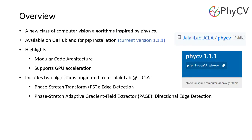PhiCV is a new class of computer vision algorithms inspired by physics. The source code is available on GitHub and the library can be installed from PIP. Two highlights of PhiCV are the modular code architecture and compatibility for GPU acceleration.